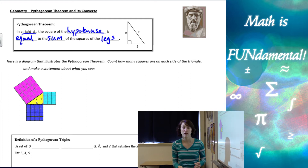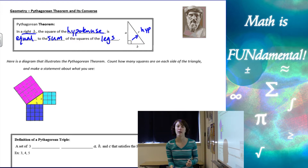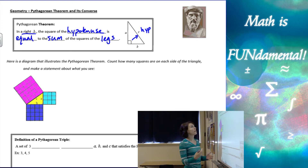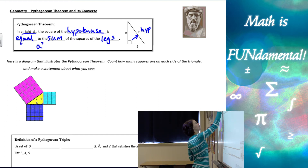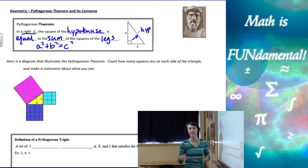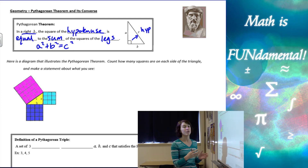In a right triangle, we have to remember that the hypotenuse is always the side across from the right angle — always the longest side. The Pythagorean Theorem in formula form is a squared plus b squared equals c squared. C is our hypotenuse; it's always on its own side of the equal sign. The two legs, a and b, are always together on the other side.